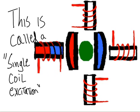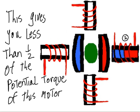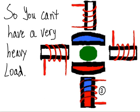This is called a single coil excitation. Only one coil at a time gets energized. This gives you less than one half of the potential torque of this motor. So you can't have a very heavy load.